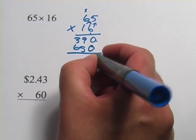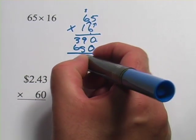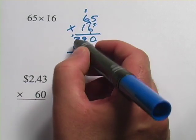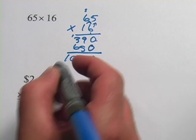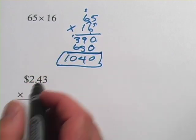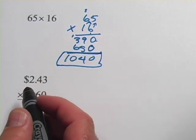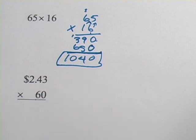0 plus 0 is 0. 9 plus 5 is 14, carry the 1. 1 plus 3 is 4, plus 6 is 10. So the answer there is 1,040. 16 times 65 is 1,040. You can check that on your calculator.